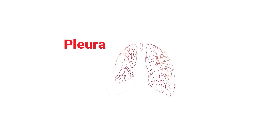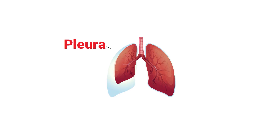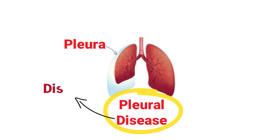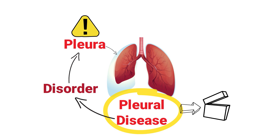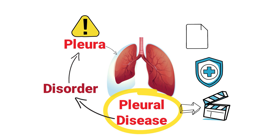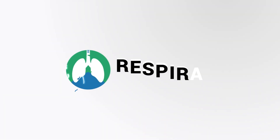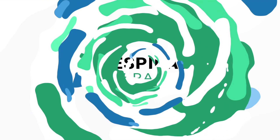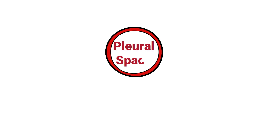The pleura is a thin membrane that surrounds and protects the lungs. A pleural disease is a broad term used to describe any disorder that affects this membrane. We created this video to cover the medical definition and provide a brief overview of this topic.